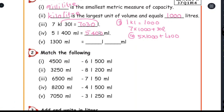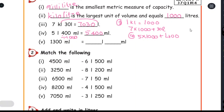That is why 1,300 milliliter — that is a liter conversion. To convert milliliter to liter, divide by 1,000. 1,300 divided by 1,000.